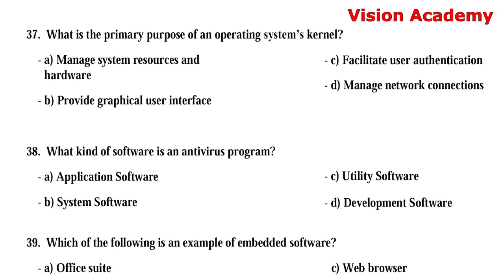Question number 37: What is the primary purpose of an operating system's kernel? Option A: manage system resources and hardware. The right answer is Option A, manage system resources and hardware.